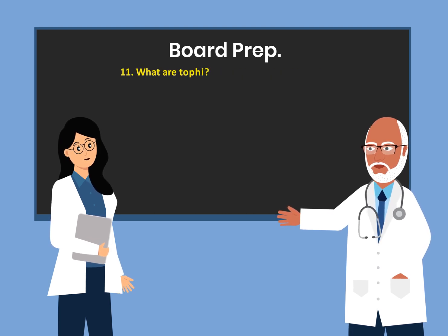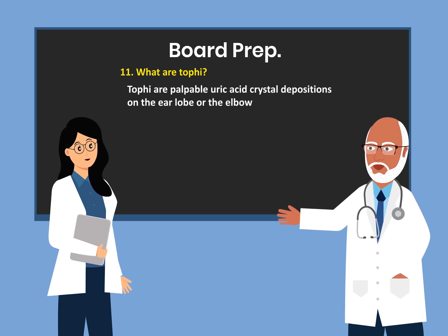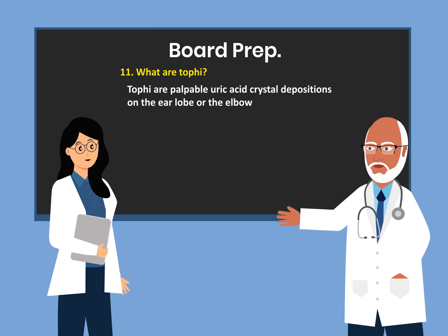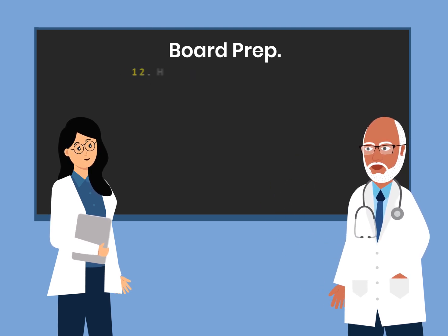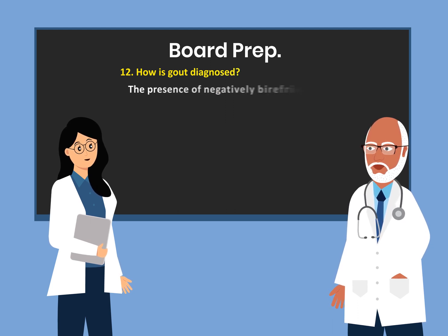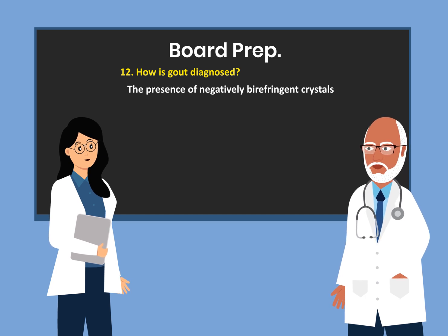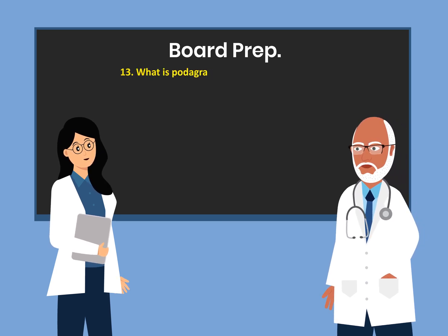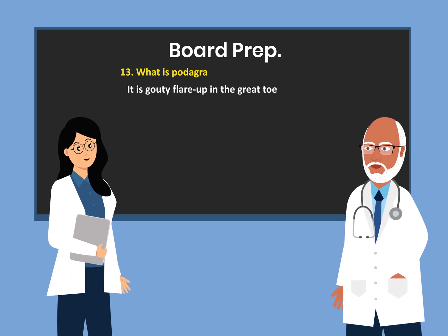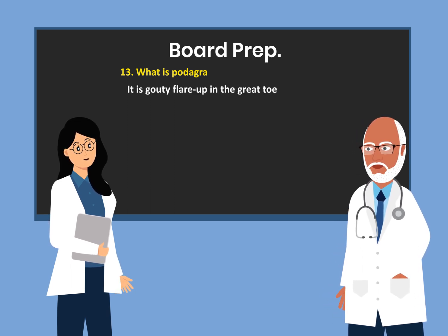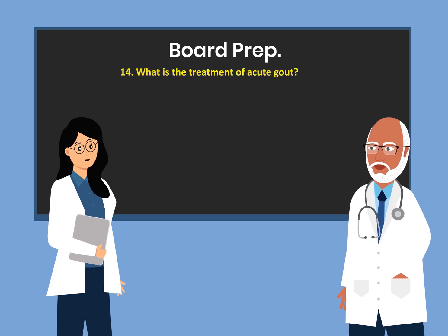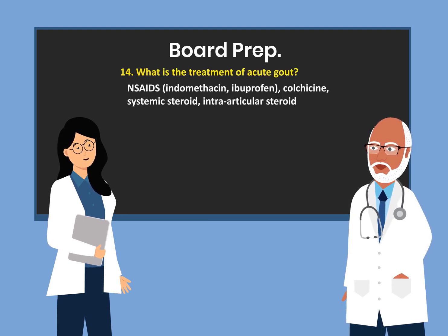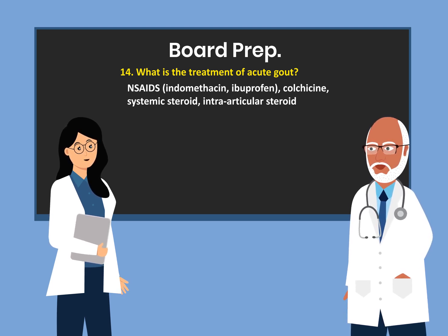What are tophi? Tophi are palpable uric acid crystal depositions on the ear lobe or the elbow. How is gout diagnosed? Gout is diagnosed by the presence of negatively birefringent crystals. What is podagra? It is a gout flare up in the great toe.